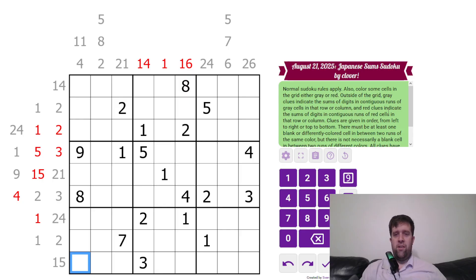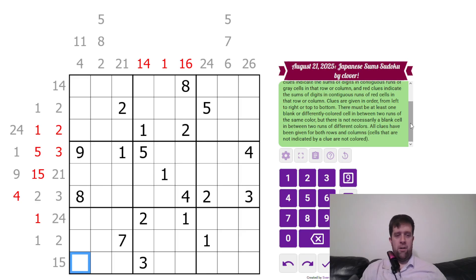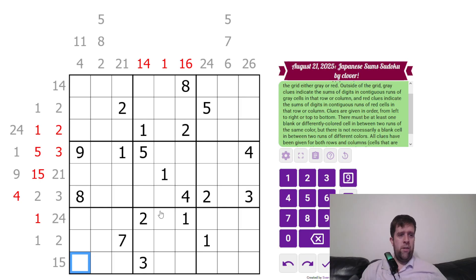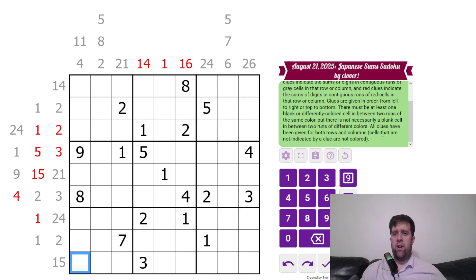So, what that means is, you're going to have to shade. Sorry to everyone who keeps telling me, oh, I don't like shading. Today, I will be impressed if you can solve without shading - have a bonus hat on me. Clues are given in order, from left to right, or top to bottom. There must be at least one blank or differently colored cell in between two runs of the same color, but there is not necessarily a blank cell in between runs of two different colors. All clues have been given for both rows and columns. Cells that are not indicated by a clue are not colored.